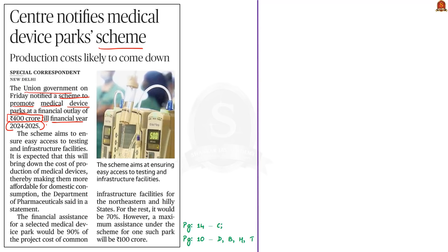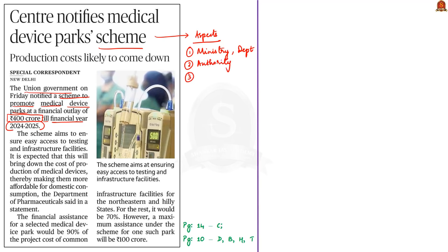Let us look at the various aspects of this scheme which will be important from an exam perspective. Whenever you come across a new scheme in the newspaper, always make it a point to look into which ministry and department it comes under, who is the implementing authority, what are the objectives, and the funding aspects of the scheme.